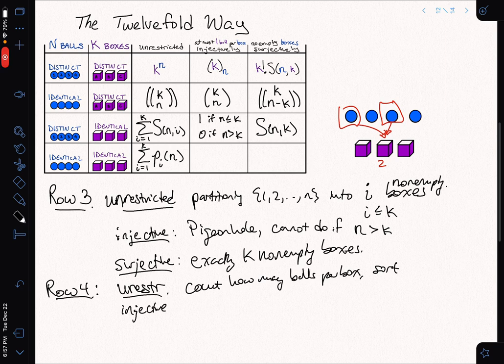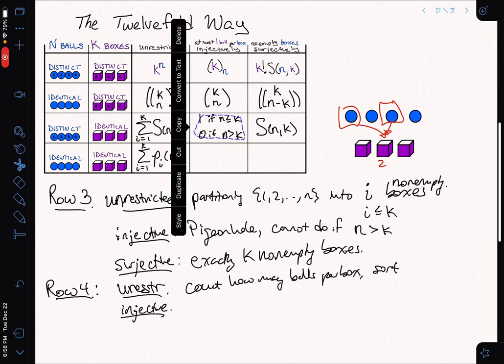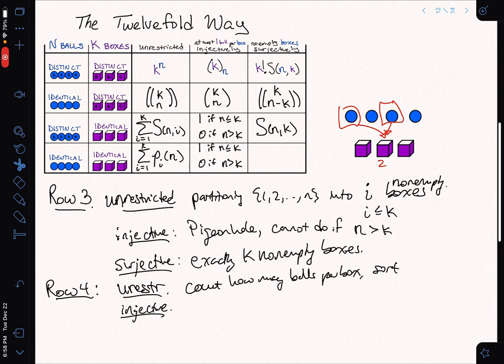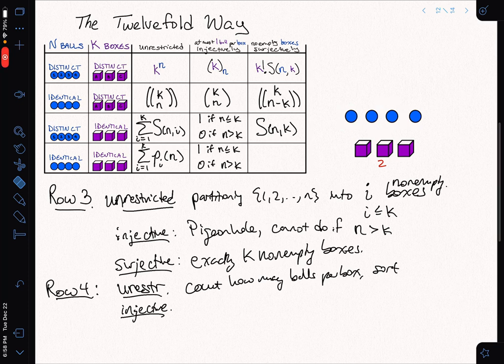What about the injective case? Well, the injective case, again, I cannot do it by the pigeonhole principle. If k is too big, and if I can do it, then once again, we have the same answer, because it doesn't matter that the balls are unlabeled in this case. Every ball gets a box, if that's possible to do. Otherwise, it's impossible to do, so we have the same solution. And in the final case, so this is pigeonhole again.